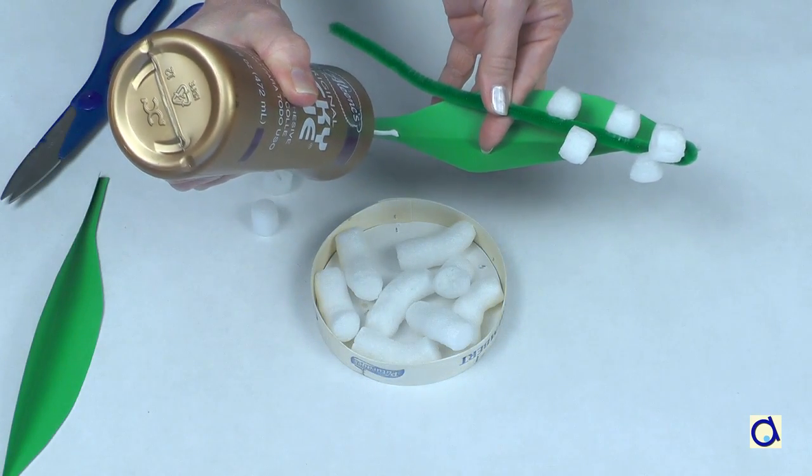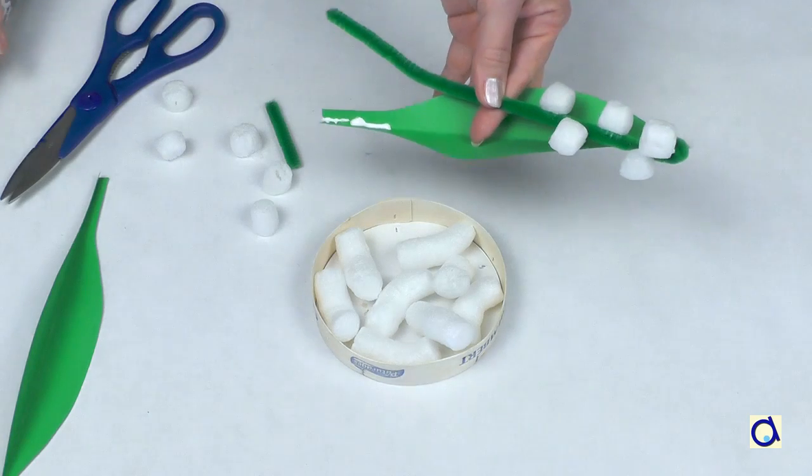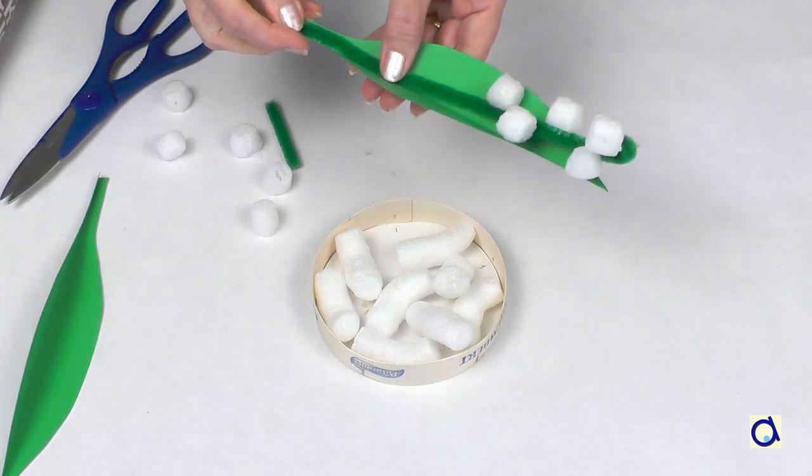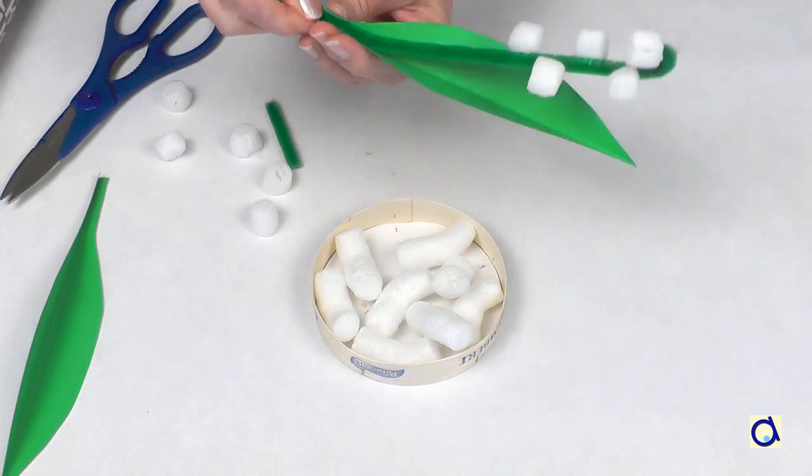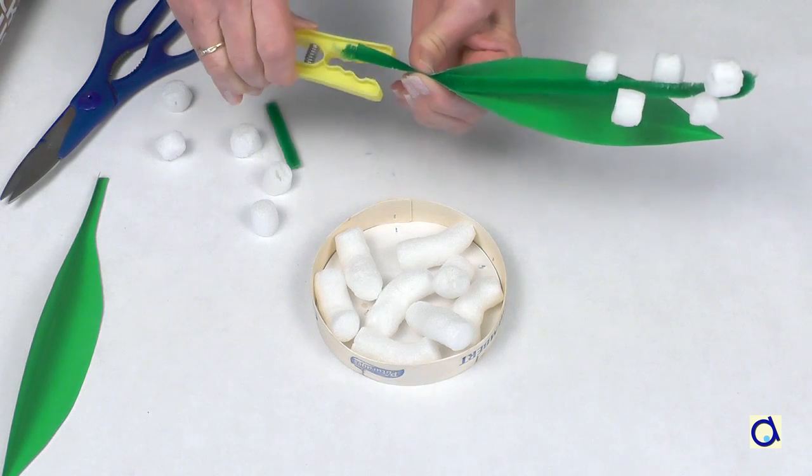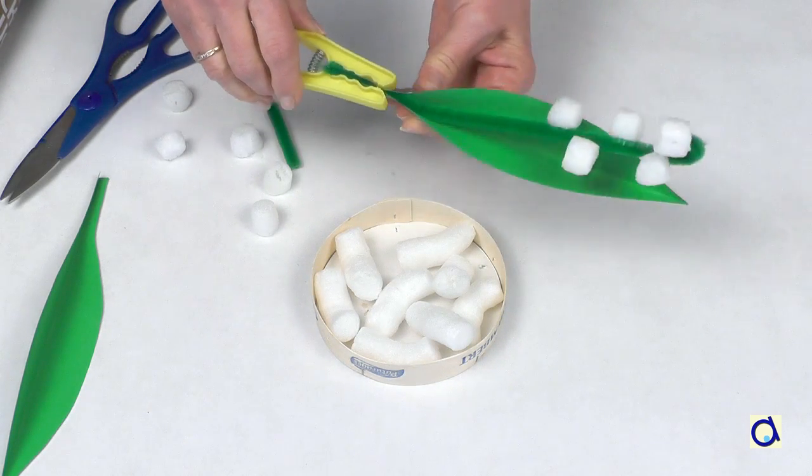When you are satisfied with your lily of the valley, take the construction paper and put a little bit of white glue on the base of the leaf. Put the stem of the flower in the fold of the leaf and maintain the base of the leaf with a clothespin while the glue dries.